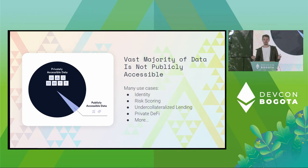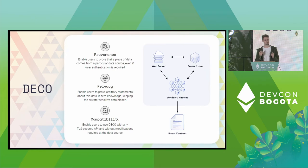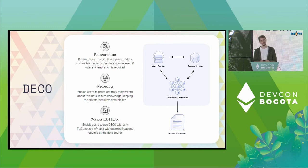And more things I probably can't even imagine yet — this is a very general technology. The technology we're working on to address this is called Deco. Deco was originally researched at Cornell University and IC3, the Initiative for Cryptocurrencies and Contracts. Since then, Chainlink has pushed the project forward, is actively developing it, and further researching it to make it efficient and practical.